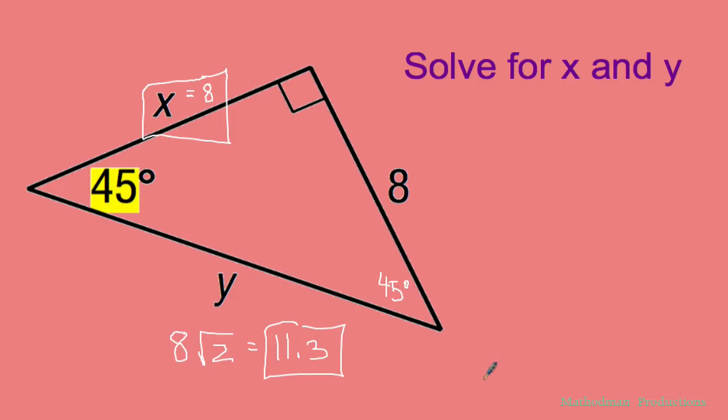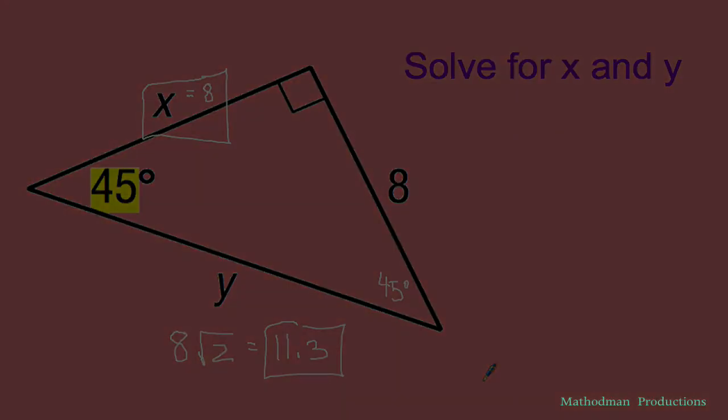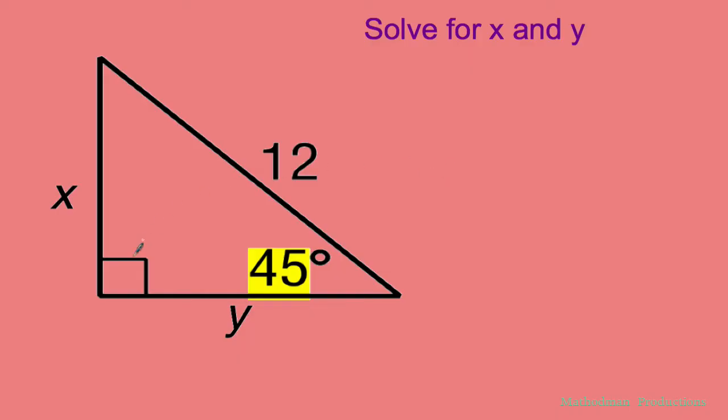That one's pretty easy. Let's try a different scenario. Let's try out the second problem where the hypotenuse is given to us. It's given to us as 12. This is 45. I know that the other angle measurement is 45 degrees as well because they have to add up to 180 inside a triangle. 45-45 plus 90 is 180.